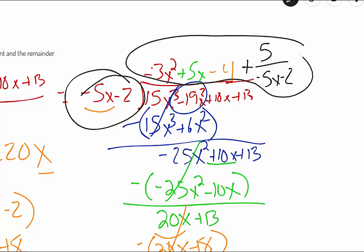And this bit right over here, the negative 3x squared plus 5x minus 4 plus our remainder, that is our solution.